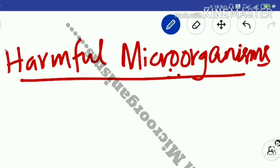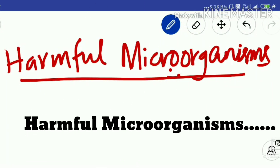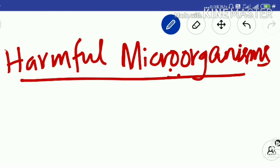In this class we are going to study about harmful microorganisms — microorganisms which directly or indirectly cause problems to human beings, animals, as well as plants. Let us list the important harmful activities of microorganisms and how they are harmful.